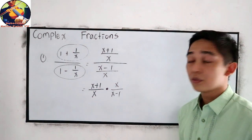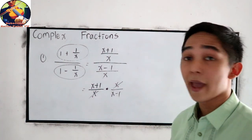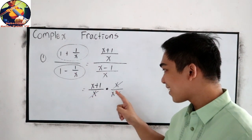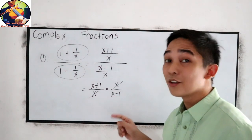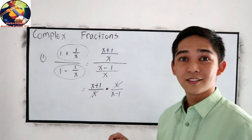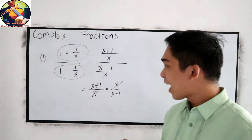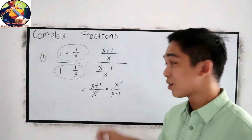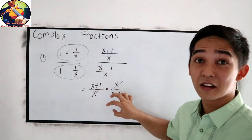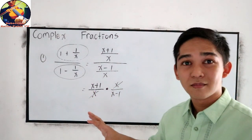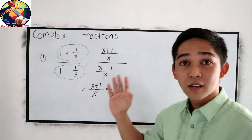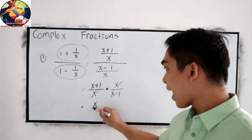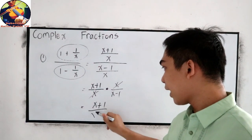And now, we can cancel x and x. Can we cancel x plus 1 and x minus 1? No. They are different. How about, can I cancel x and x? No. Because this is a single term. We cannot split that. We're going to cancel, so we need to cancel the binomial to binomial. So our final answer is x plus 1 over x minus 1.